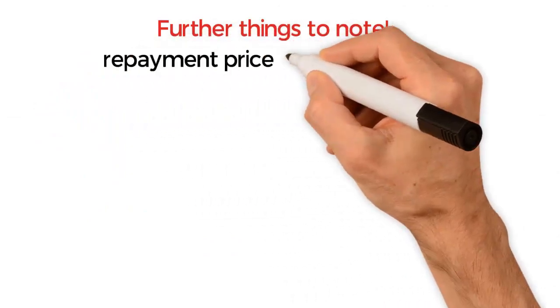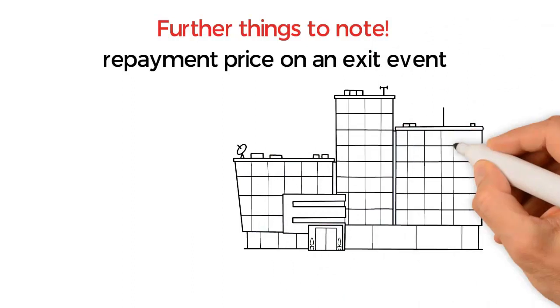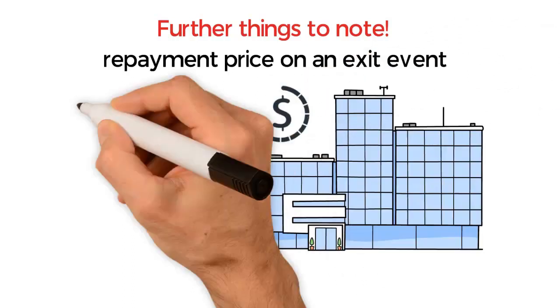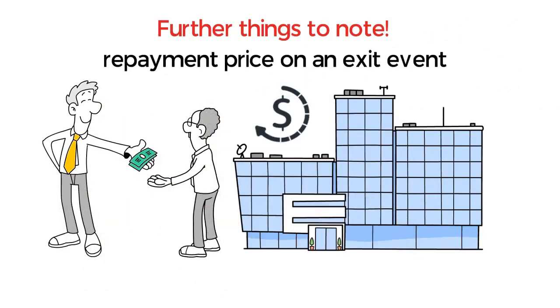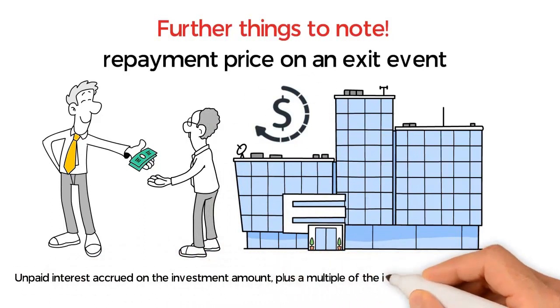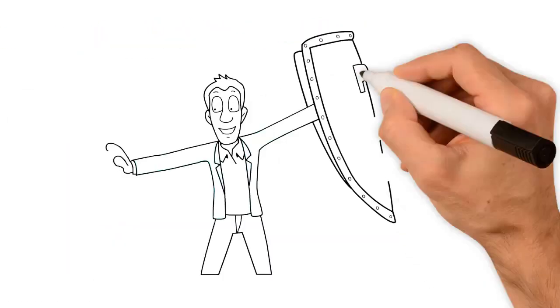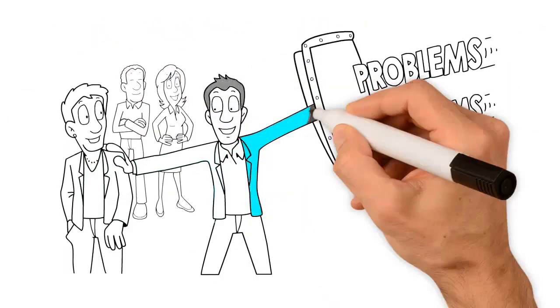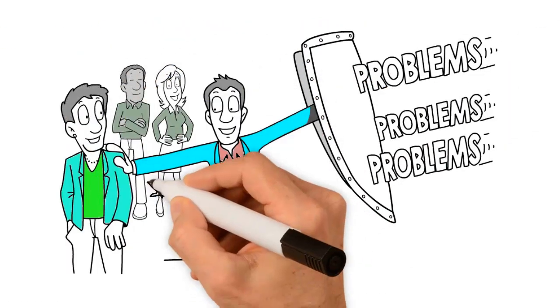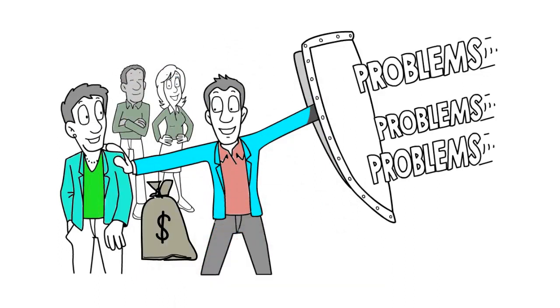A further point to note is the repayment price on an exit event. The KISS note typically requires the company to repay the investor unpaid interest accrued on the investment amount, plus a multiple of the investment amount, typically two times. This grants the investor additional protection in the event the company fails to make it to the qualified financing round.